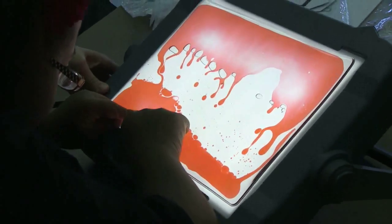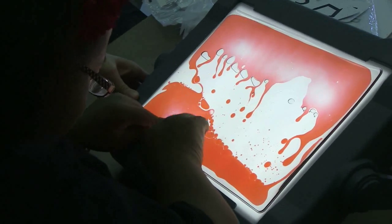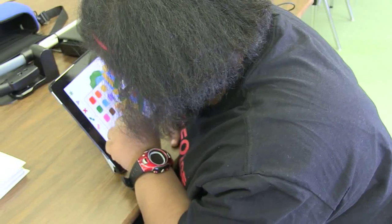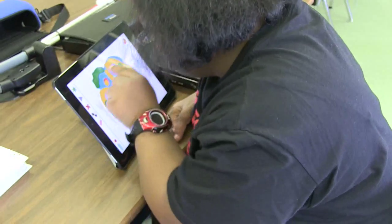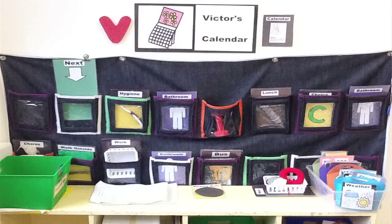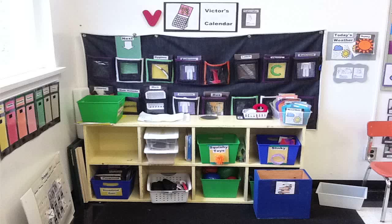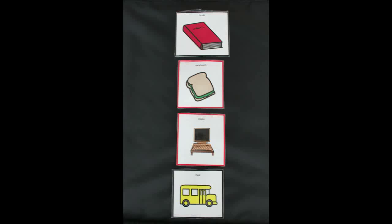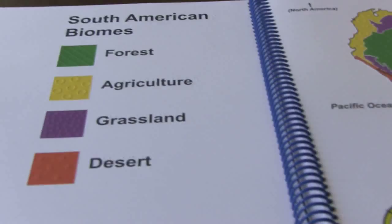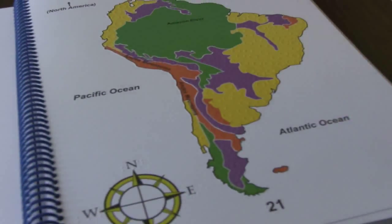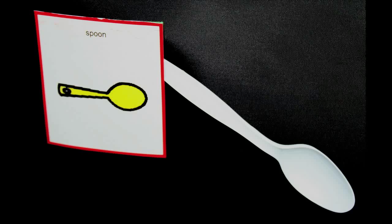I also consult with teams of students who have multiple disabilities. We look at their program, and if they're using communication aids or cues, I may look at how large they are, where they should be placed within the student's visual field, and at what distance they should be placed. In short, I strive to ensure the greatest possible learning environment for the student.